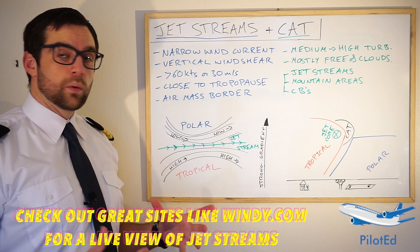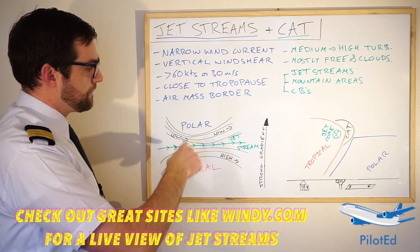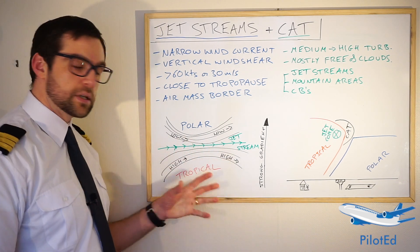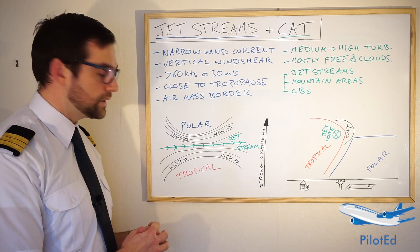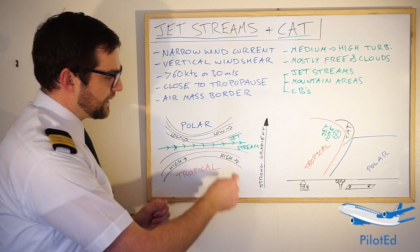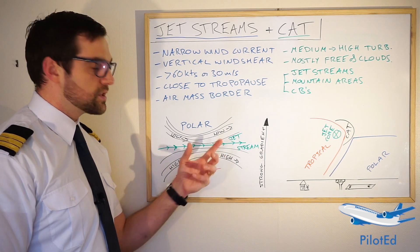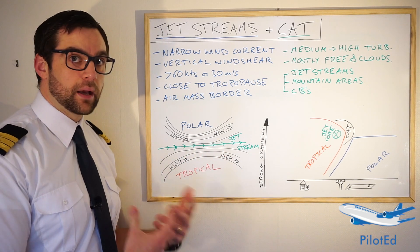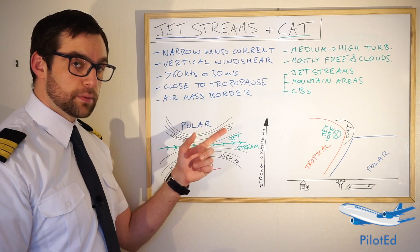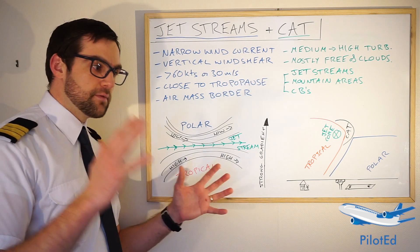So where and how does a jet stream occur? Jet streams happen on the border of two air masses. In the northern hemisphere, this would be a low pressure area turning anti-clockwise, and the tropical side would be a high pressure turning clockwise. As those air masses turn like that, we essentially get a flow of air. The bigger and stronger the gradient between the high and low pressure, the bigger the jet stream. It tends to be generated close to the tropopause, also due to the temperature gradient.